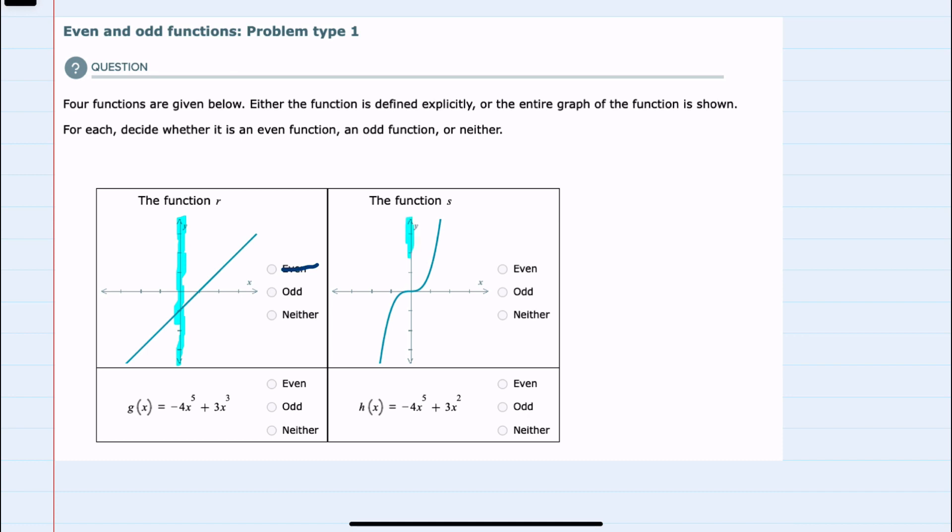Since we're looking at these visually, we can go ahead and look at the second one. This one is also not mirrored across the y-axis, so it also does not have even symmetry.